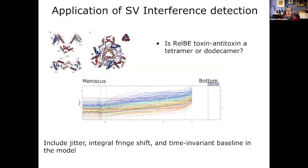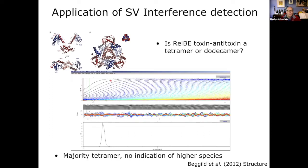Here's an example of interference detection from a project with Lori Passmore. They had solved a structure and the question was whether the complex was a tetramer or a dodecamer, as another group had published a structure with a different number of subunits. The sedimentation data looked noisy with jitter, but using time-invariant correction we could fit the data and find that the majority of the protein was in a tetrameric form, confirming the crystal structure was correct with no significant higher-order species.